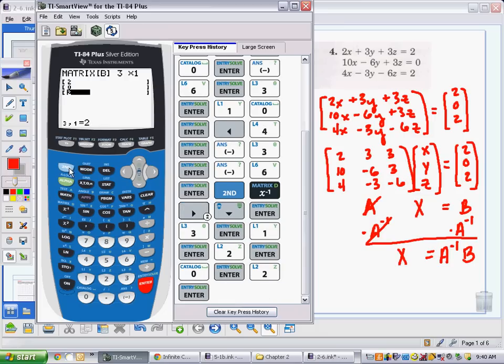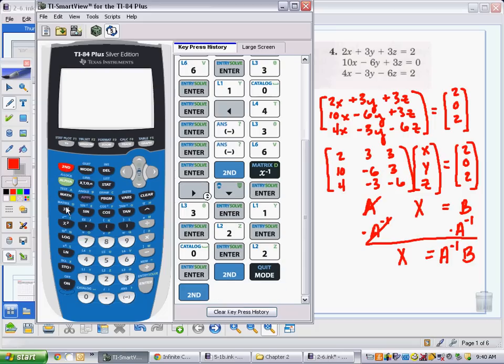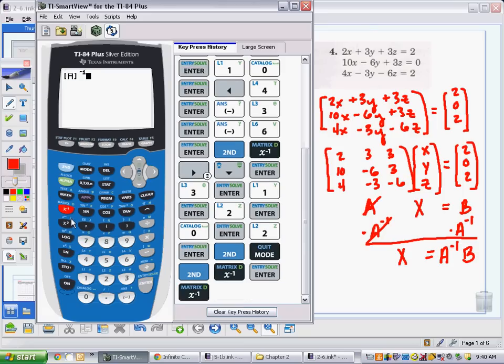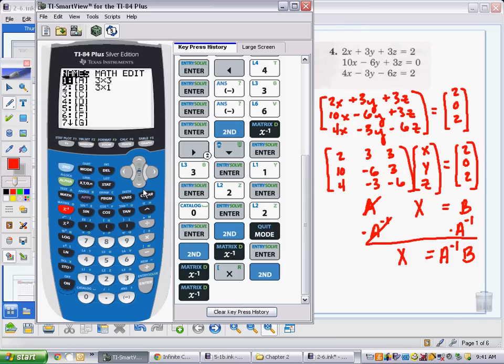Now, I get out of this to my main screen, where I can do calculations, so I press second, quit. And I'm on my main screen, and I will call up matrix A. Second, matrix, A. I want the multiplicative inverse of that, so that is my x to the negative one key, times, call up matrix B, second, matrix, B. Press enter.